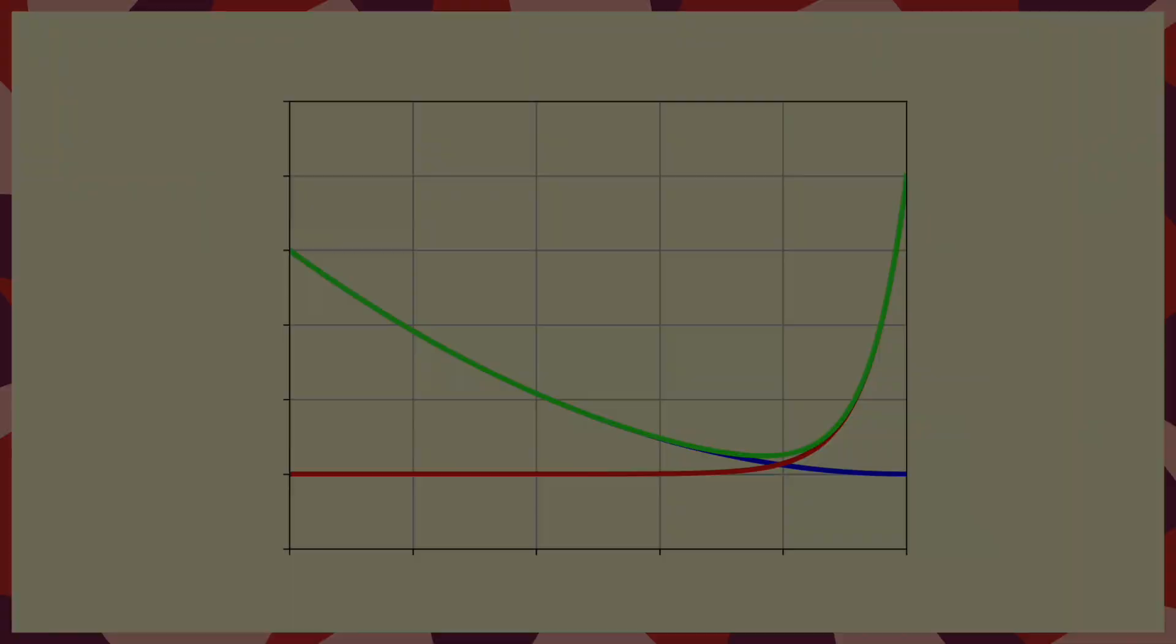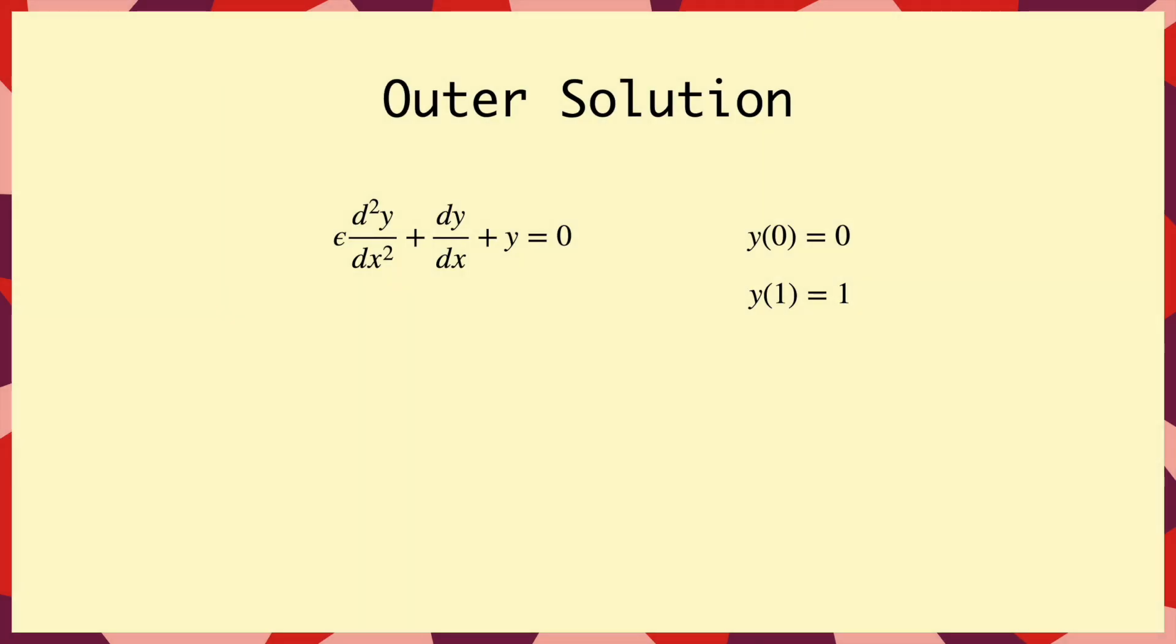So let's start by finding the outer solution. And we said that for this step we're going to ignore the epsilon term. And if we do that, we have a first order DE that we can solve. And our outer solution, which we'll call y_out, is A times e^(-x), where A is some constant. But since we don't know where the boundary layer is yet, we don't know which one of the two boundary conditions we need to use to find A. So we'll leave that for now and move our focus to the inner solution.